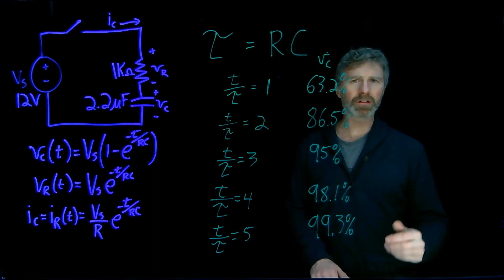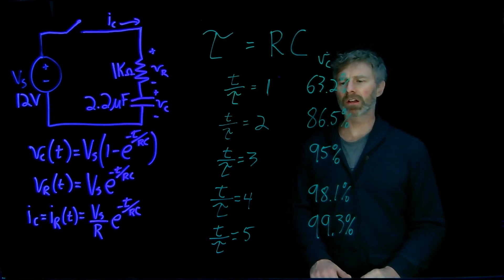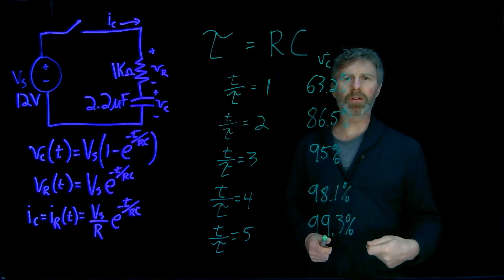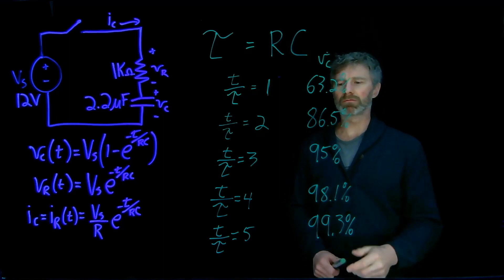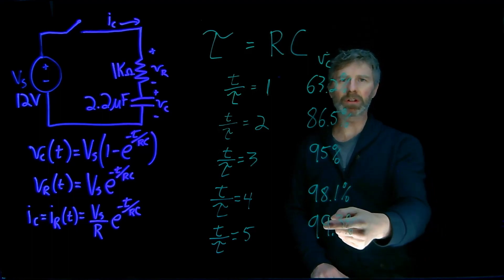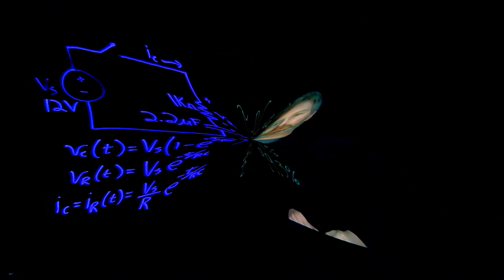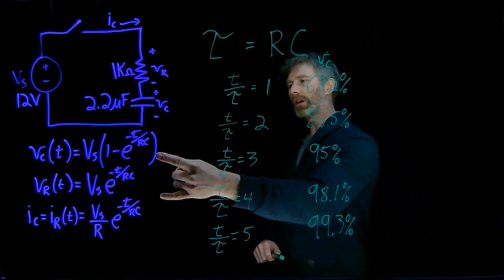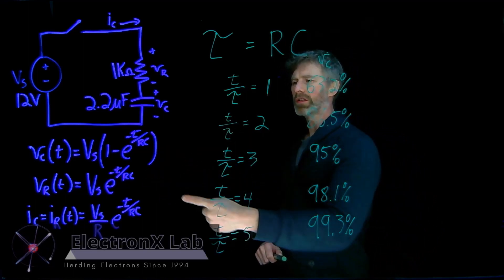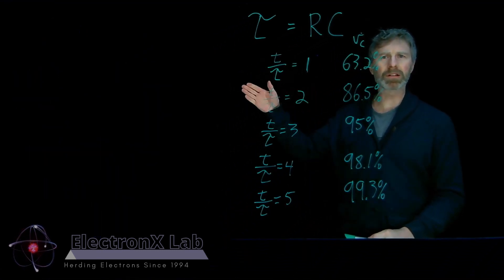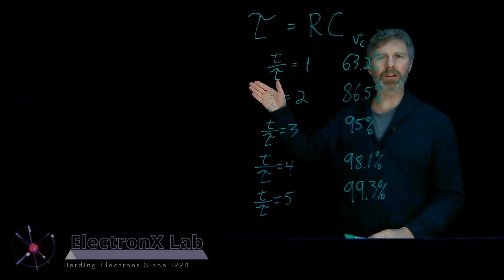Sometimes you may need to charge it a little bit further, but for the most part this is generally considered fully charged. This has real consequences if you're measuring that voltage with a DMM — once you get to 5 tau, your DMM may not be able to distinguish between 5 tau and 6 tau anyway. If you want to see more videos on capacitors, including ones where I show you how to derive the voltage across the capacitor, voltage across the resistor, and the current through those two devices, you can check out this playlist here.